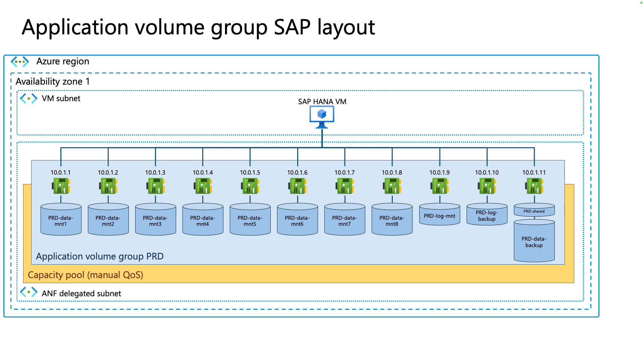The smallest deployment will have one data volume, one log volume, and one shared volume. The other volumes are optional, and these can be removed from the deployment during the workflow.